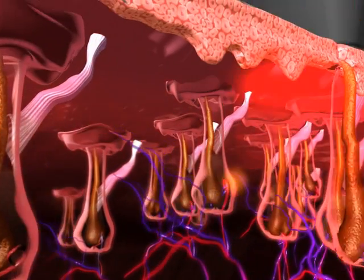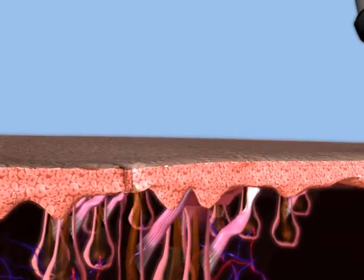The SHR mode protects the epidermis and provides a virtually painless treatment. The sapphire tip on the handpiece provides contact cooling to the epidermis, preventing superficial heat injury.